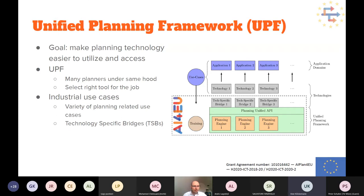The goal of our project is to create a unified planning framework, making planning technology easier to utilize and access. This so-called UPF has many planners under the same hood and exposes them through one unified API. Using this planning framework internally, it selects the right tool for the job. We have many industrial use cases from different partners across industrial domains, and for each we want to utilize planning technology. There are technology-specific bridges connecting to the planning technology.